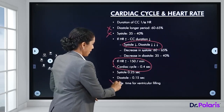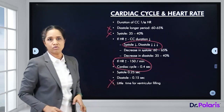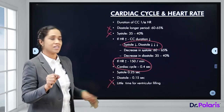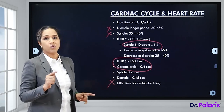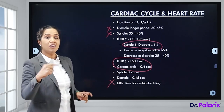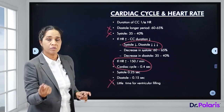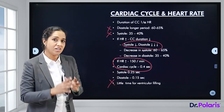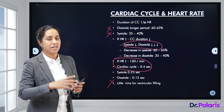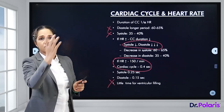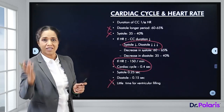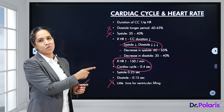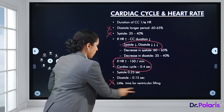This creates a major problem: with heart rate at 150 bpm and cycle duration at 0.4 seconds, there is very little time for ventricular filling. If the ventricle is not filled properly, it will affect stroke volume and ejection fraction.